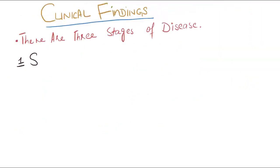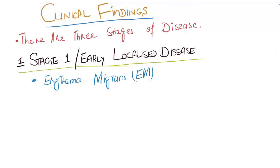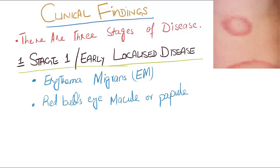Now, what are the clinical features? There are three stages of Lyme disease. Stage 1, or early localized disease, includes skin reactions around the site of the tick bite known as erythema migrans.